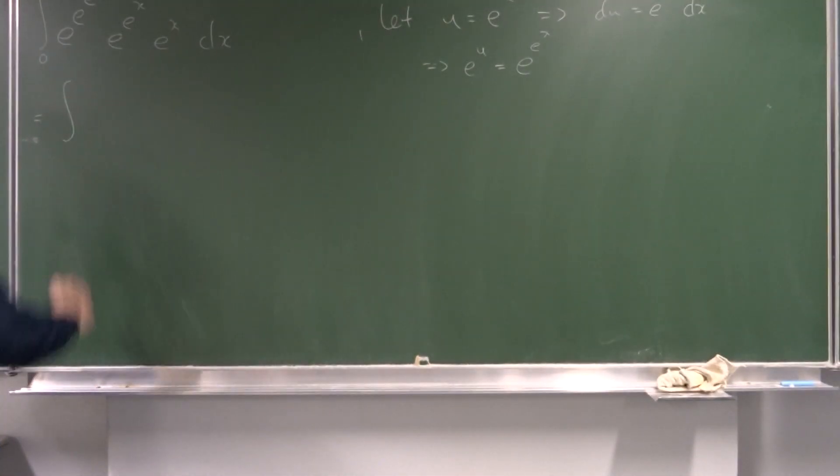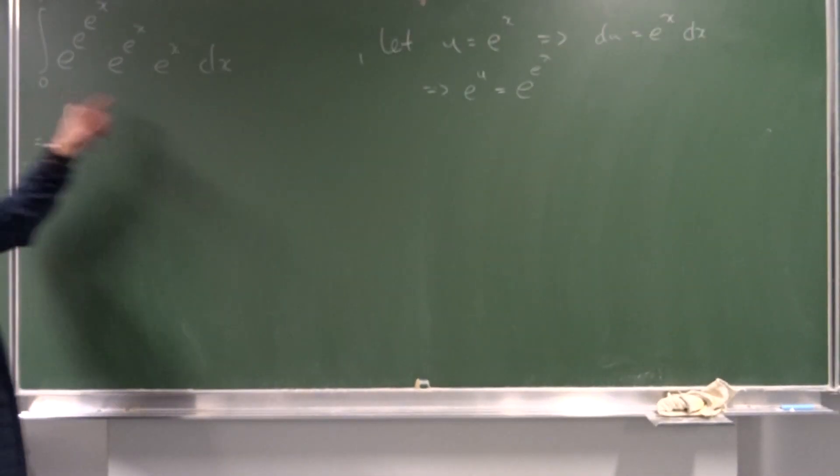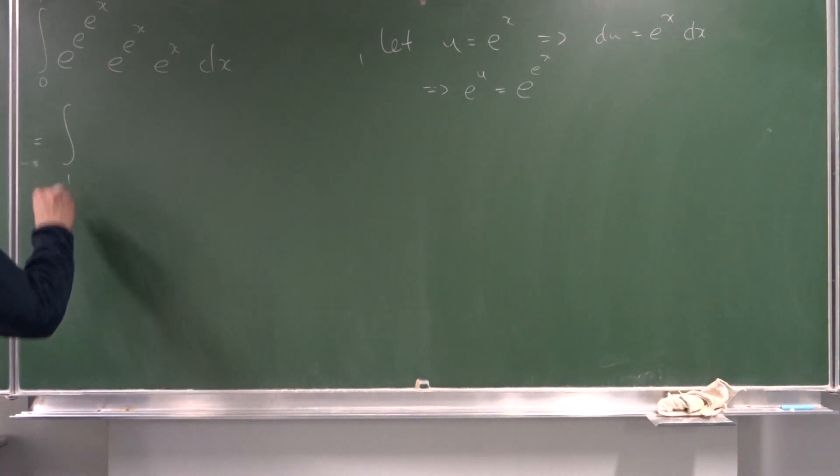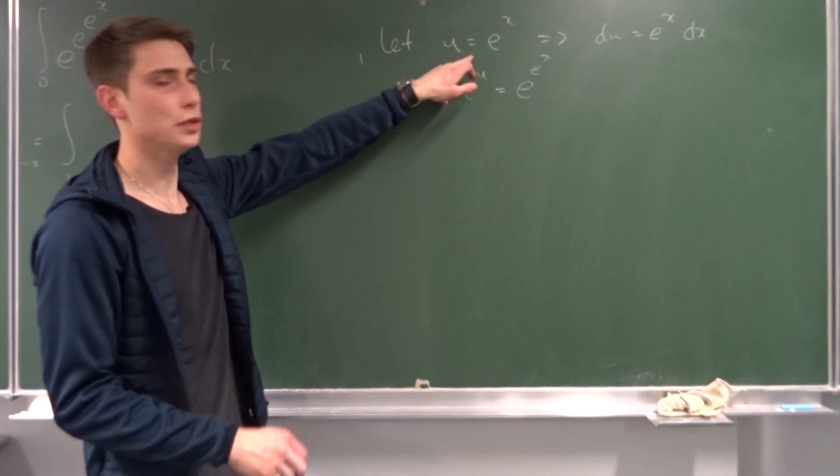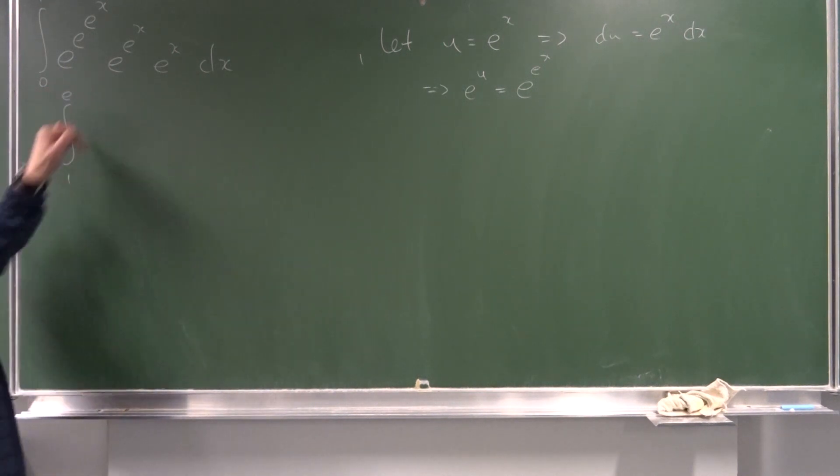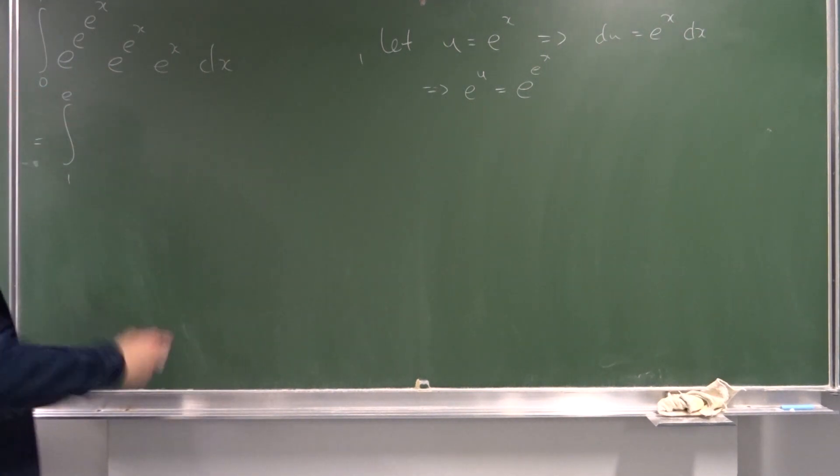Now, we've got a new integral from... So, if we plug zero into here, u equals e to the zero, so that's just one. And if we plug one into here, u equals e to the first power. So, our new limits are from one to e.